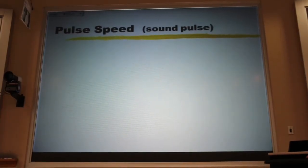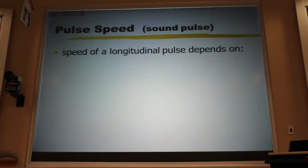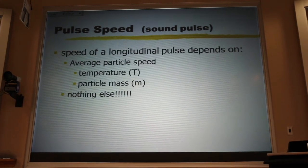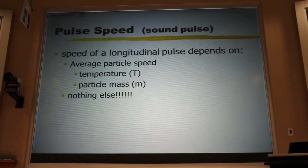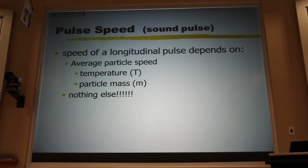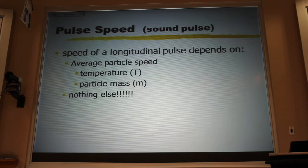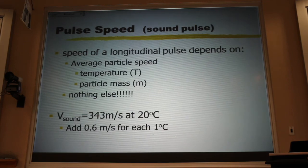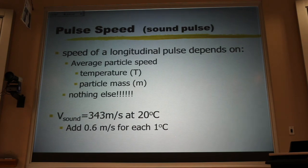We also talked about the pulse speed for sound, and what we found was it depended on how hot the air was and whether it was air or whether it was some other kind of gas. We find that in air, it travels at 343 meters per second at room temperature, and as you heat up the room, it goes a little bit faster, 0.6 meters per second for every one degree Celsius that we raise the temperature.